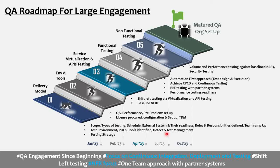Once you understand your scope and type of testing, you need to define roles and responsibilities — what are the different roles in your QA team, what are their responsibilities, and then you need a team ramp-up plan and a ramp-down plan for later in the engagement.